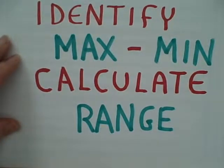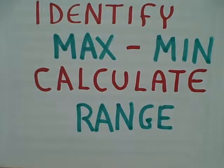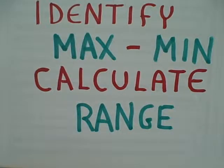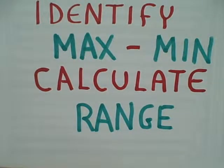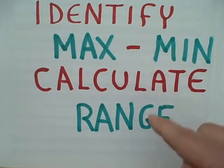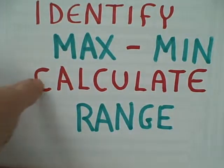Here it is. The very first thing you should do when given a data set is to identify the maximum and minimum — in other words, the highest score of all of your cases and the lowest score of all of your cases. Then you calculate the range. That's pretty easy. It's the maximum minus the minimum, and the remainder is the range.